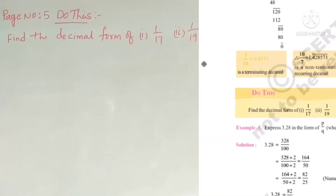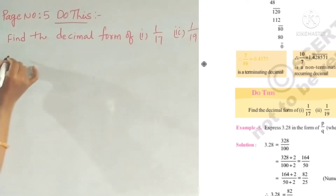Hi students, welcome to my channel. So on page number five, we have a problem. Find the decimal form of 1 by 17 and 1 by 19.